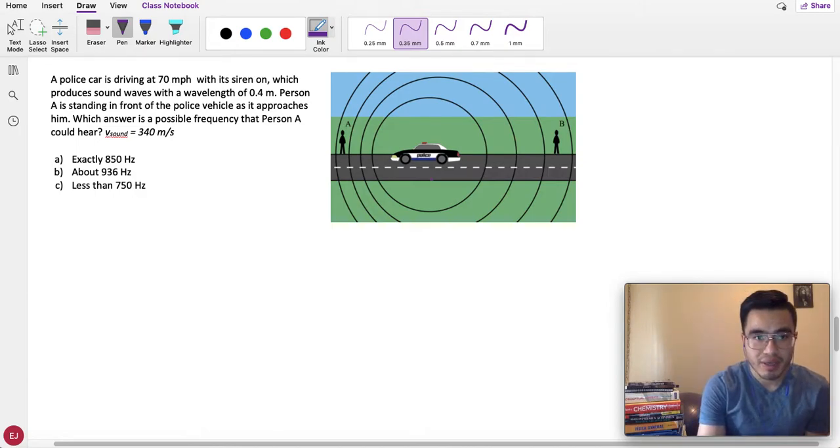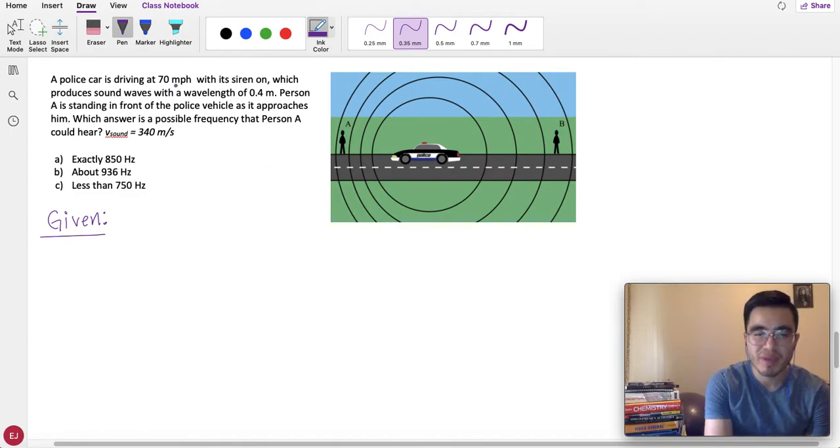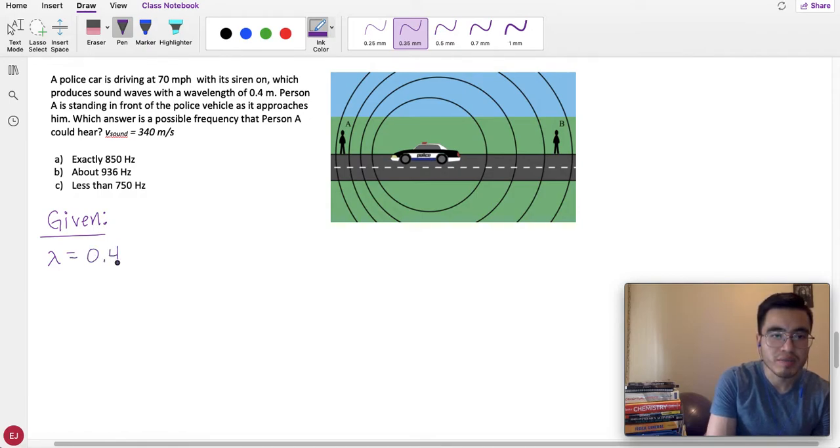Let's get started with the given, as usual. The first number that we see is 70 miles per hour. However, we're not going to use this for now. I'm going to explain how to use it for extra credit when we get the actual frequency, which person A will hear. The exact frequency. And then, let's go for the next number. That is 0.4 meters. And the problem tells us it's the wavelength. So, the letter for wavelength was lambda, 0.4 meters. And then, we have velocity of the wave, which is 340 meters per second. This is the speed of sound in air. And we need the frequency, which answers a possible frequency. So, frequency equals question mark.